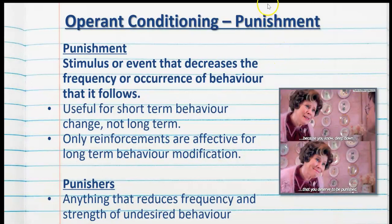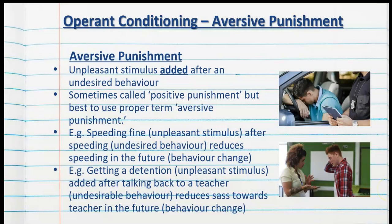Punishment is a stimulus or event that decreases the frequency or occurrence of a behavior that it follows. Whilst reinforcement increases behavior, punishment decreases behavior. This is useful for short-term behavior change, but not long-term — only reinforcements are effective for long-term behavior modification. A punisher can be anything that reduces the frequency and strength of an undesired behavior.